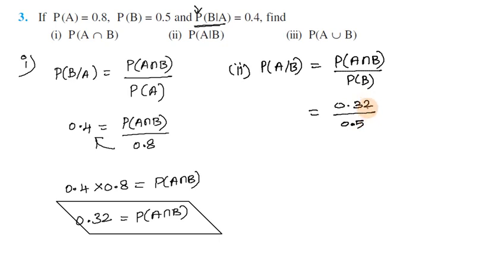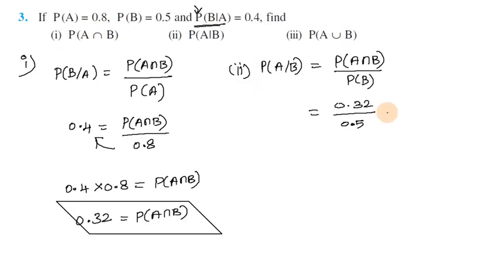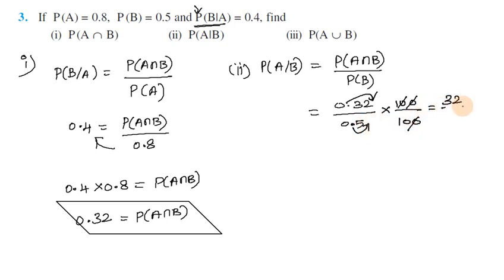Now find P(A|B). We put P(A∩B) = 0.32 divided by P(B) = 0.5. Multiplying numerator and denominator by 100 gives 32 divided by 50. Cancelling by 2: 16 divided by 25. So P(A|B) = 16/25.